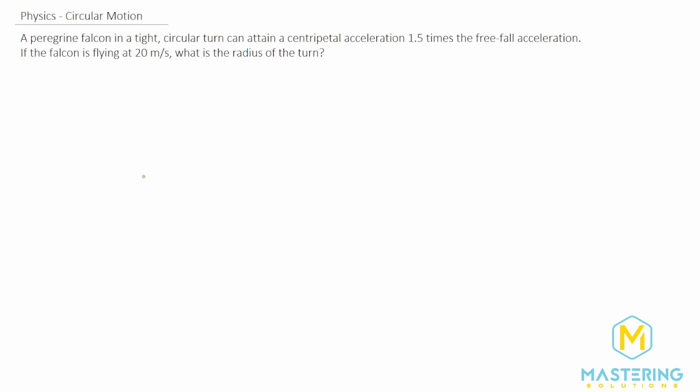Welcome to Mastering Solutions. This is a circular motion problem which says that a peregrine falcon in a tight circular turn can attain a centripetal acceleration of 1.5 times the free fall acceleration. If the falcon is flying at 20 meters per second, what is the radius of the turn?